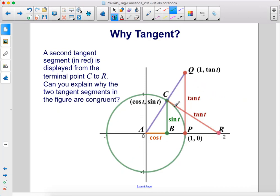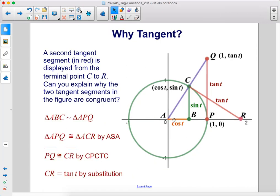A second tangent segment in red is displayed from the terminal point C to R. Can you explain why the two tangent segments in the figure are congruent? Triangle ABC is similar to triangle APQ, and triangle APQ is congruent to triangle ACR by the angle-side-angle theorem. PQ is congruent to CR because corresponding parts of congruent triangles are congruent, and CR equals tan t by substitution.